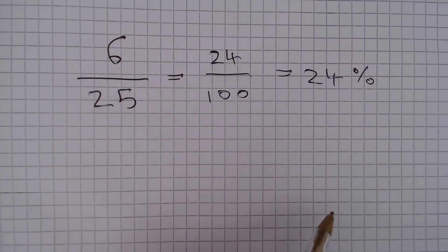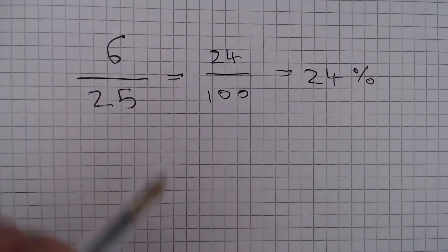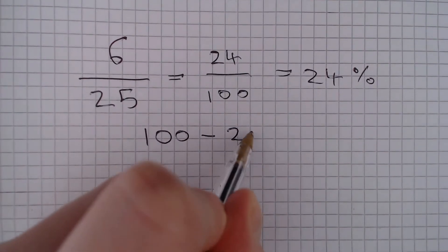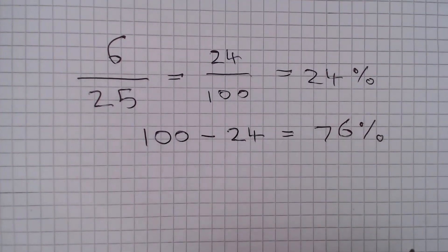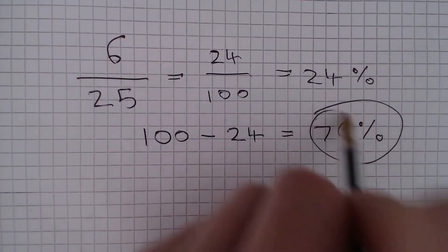Well, if they spend 24% of the time on English, then they spend 100 minus 24, which is equal to 76% of the time on other subjects. So that is the answer.